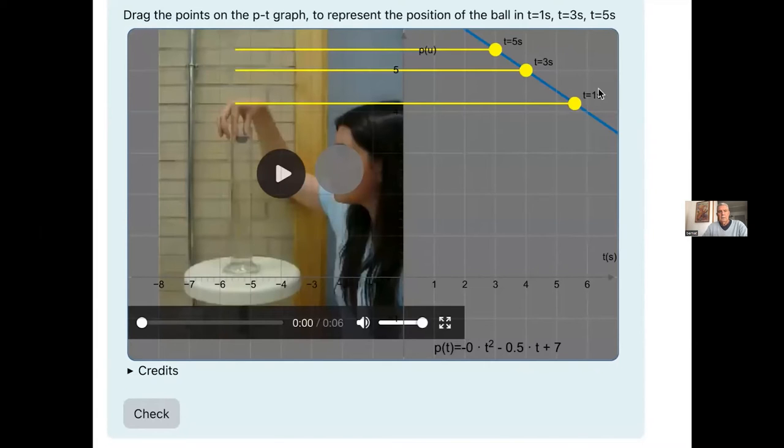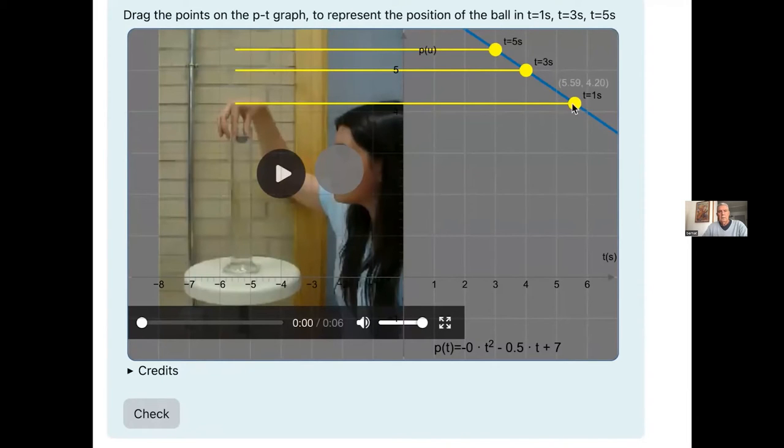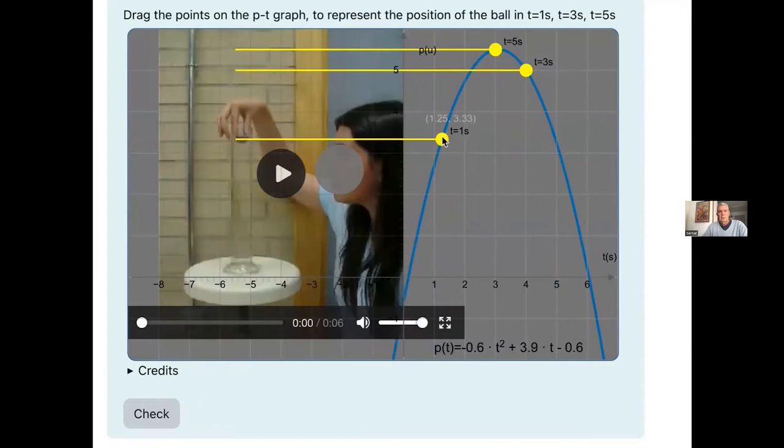This is another example of using a foreign object and a video. And now we have to place these points according to the movement of the ball.